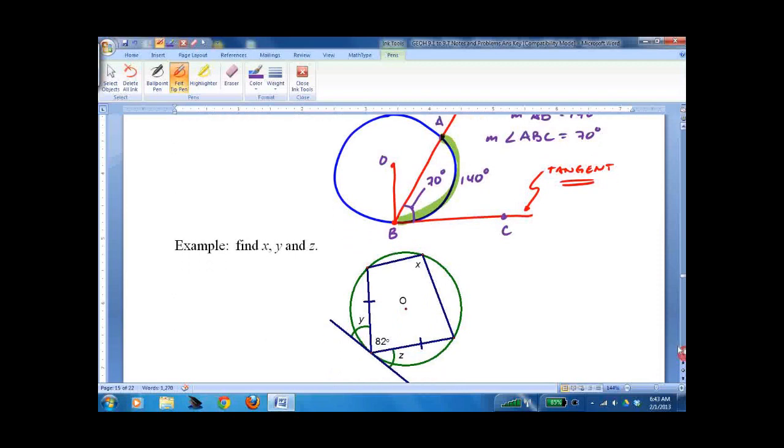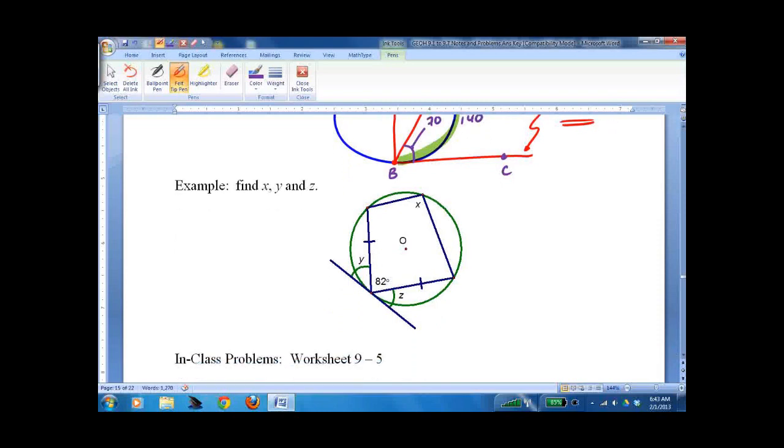So if you want to do this without me go ahead and pause it. And now I'm going to do it. So we know that 82 and x are opposite sides of a quadrilateral, so x plus 82 equals 180. x equals 98. And now we have this whole arc here has to equal two times that, so it equals 164. So this arc and this arc have to equal the same thing. So 360 minus 164 equals 196. 196 over 2 equals 98.